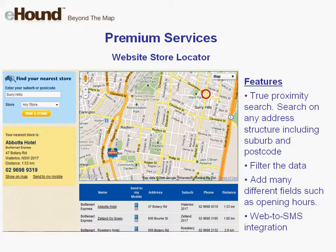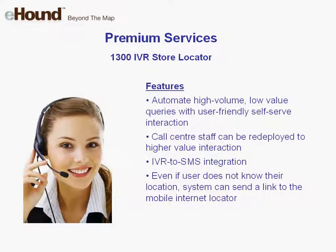Similar functionality to the Facebook service, a web locator is the core locator service to convert online searches to paying customers in the stores. Lastly, eHound can save you money by automating calls which can easily be dealt with by implementing an interactive voice response service. Instead of having a human in a call centre, the IVR locator simply lets callers know where the nearest store is.